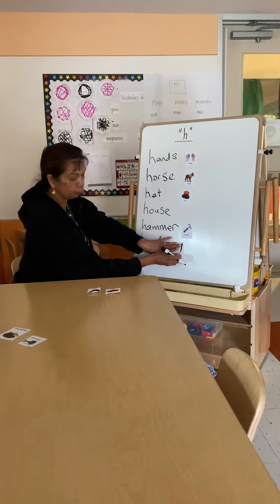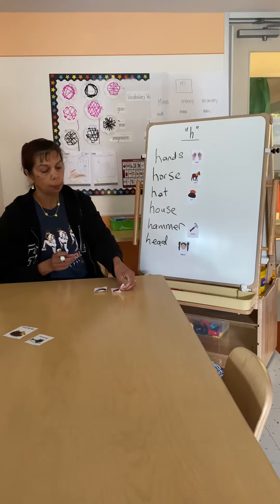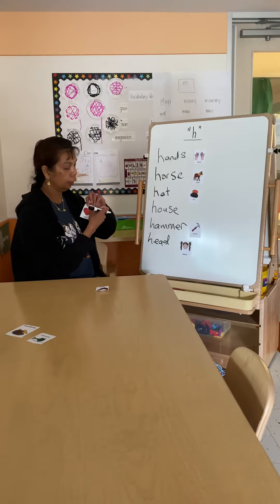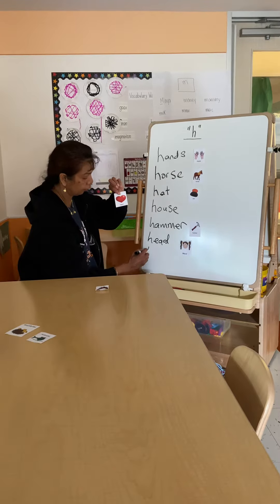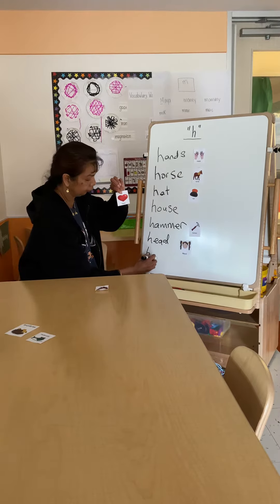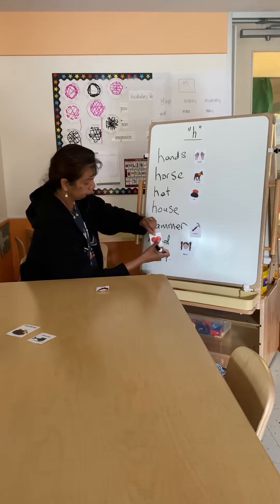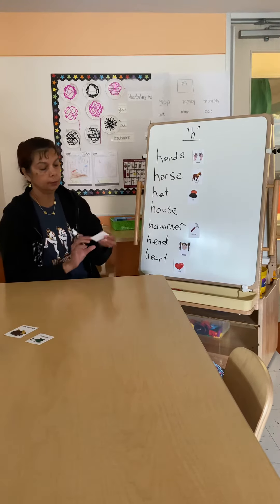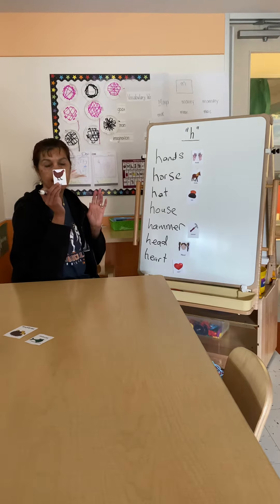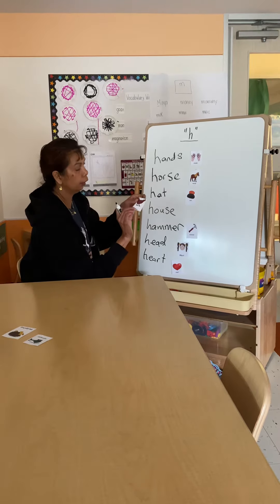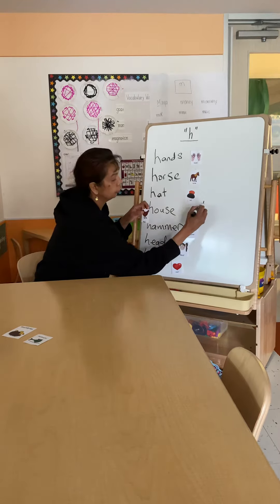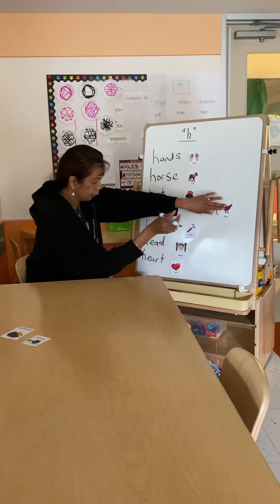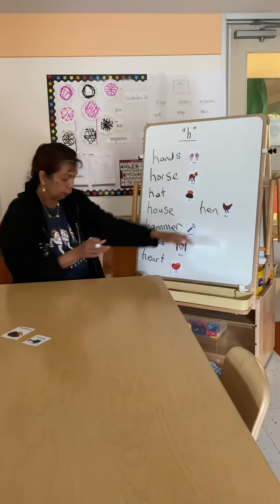I'm going to put the little girl right here. How about a 'heart'? We have a heart right here, so we're going to write it. And 'hand' — hand starts with the letter H, so we're going to put the hand right here.